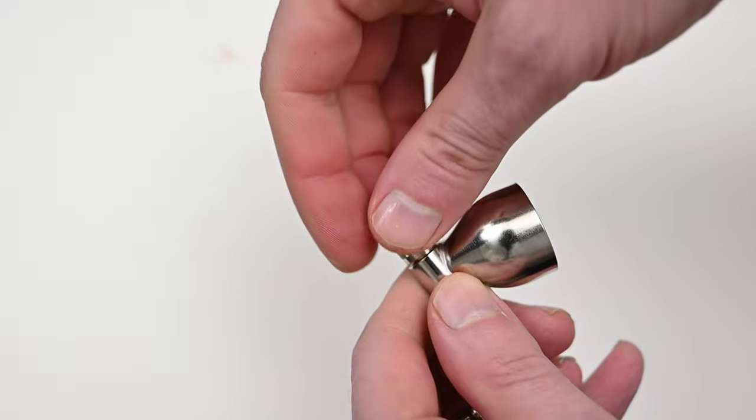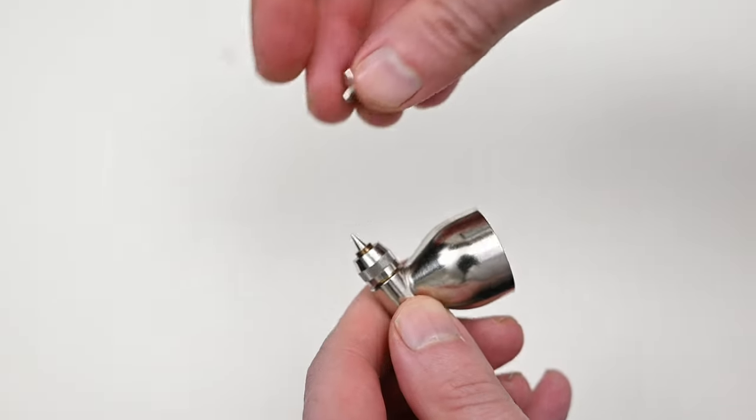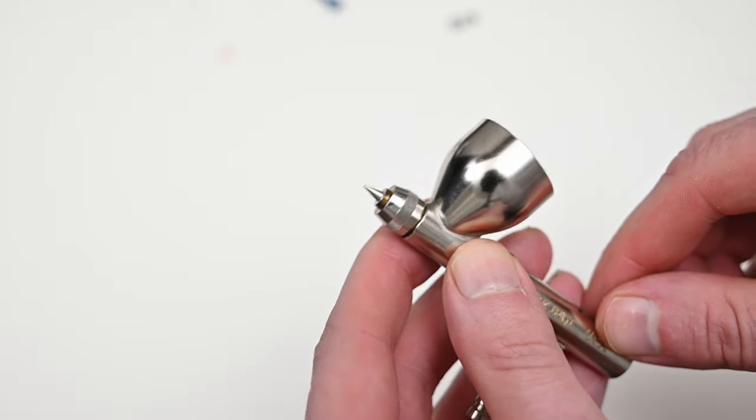Moving along to the head assembly, this consists of three parts. This first part is a spray regulator which regulates the airflow over that nozzle.